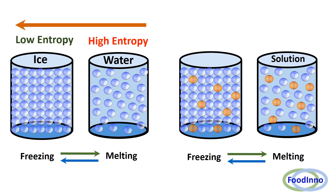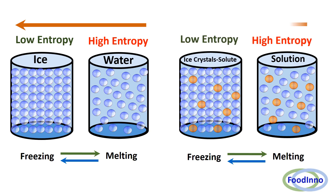In the case of a solution, entropy is higher than that of pure water due to the presence of solute. Therefore, we need to cool much lower than 0°C in order to form ice. This is why, in the earlier example of 30% fructose solution, the freezing point is observed at −4.7°C.